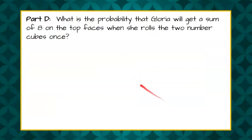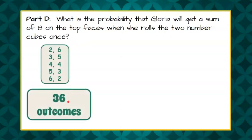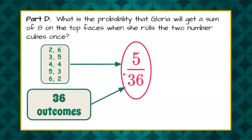Part D: What is the probability that Gloria will get a sum of eight on the top faces when she rolls the two number cubes once? We have identified five different outcomes out of our 36 total outcomes, so we have a ratio of 5 out of 36. Our probability is 5 out of 36. You may answer this in decimal form or as a percent, but as a simplified fraction it is 5 out of 36.